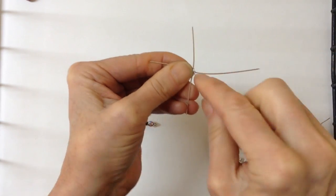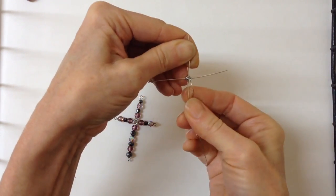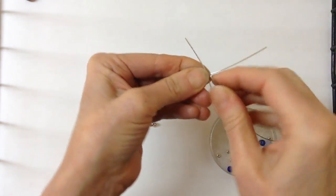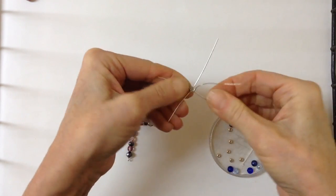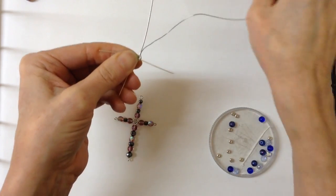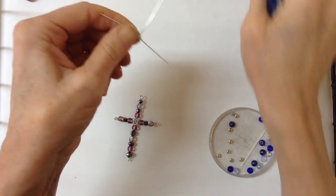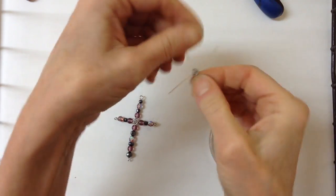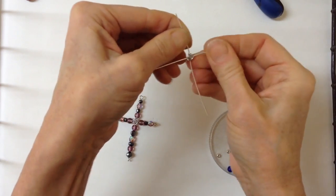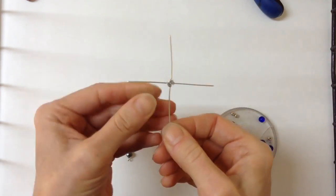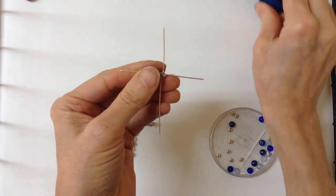If I was using 22 gauge wire I might only go around twice, but this one looks pretty good if I go around three times because the wire is a little thinner. Once you've gone around two or three complete times we're going to clip the end like that. You can push the little end in with the flat pliers and you'll see you have your beginnings of your cross. Now all you have to do is do your beading.